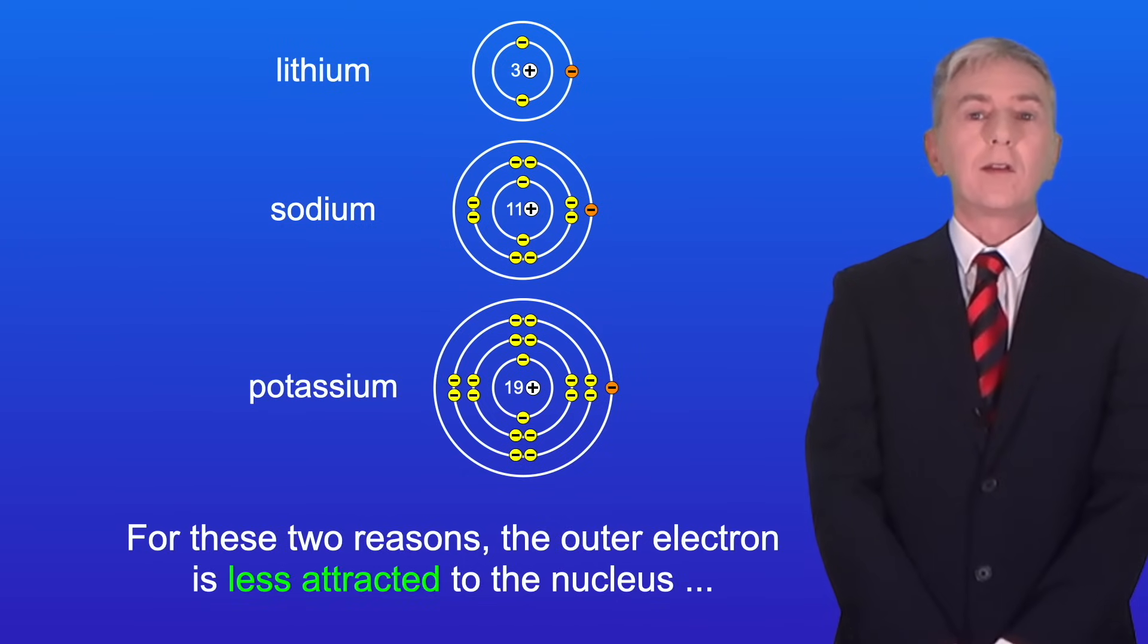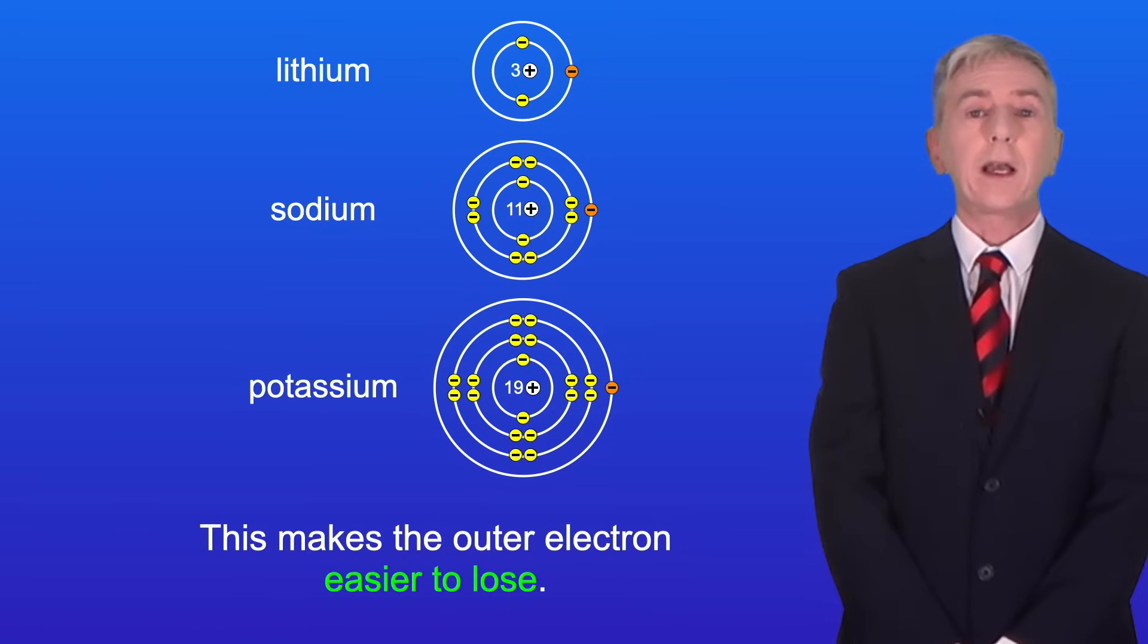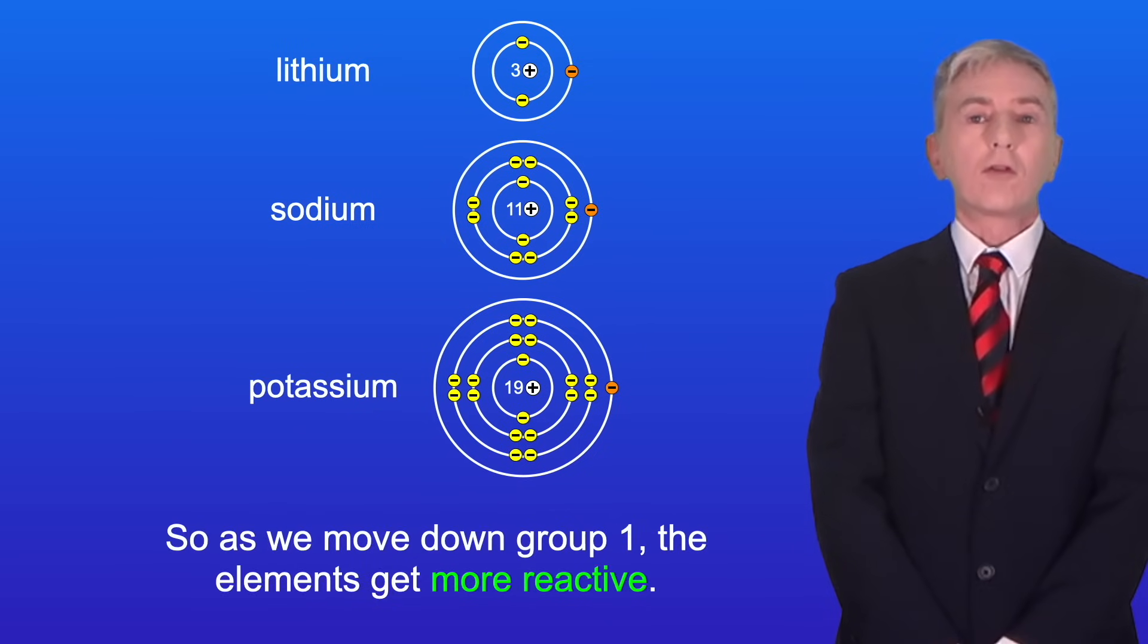So for these two reasons, the outer electron is less attracted to the nucleus as we move down group 1. And this makes the outer electron easier to lose. So as we move down group 1, the elements get more reactive.